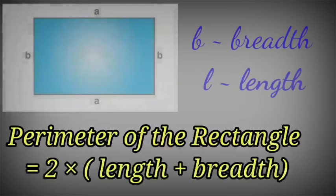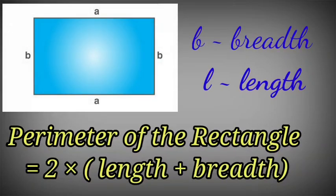We can measure the perimeter of a rectangle if we know the measures of its length and breadth.